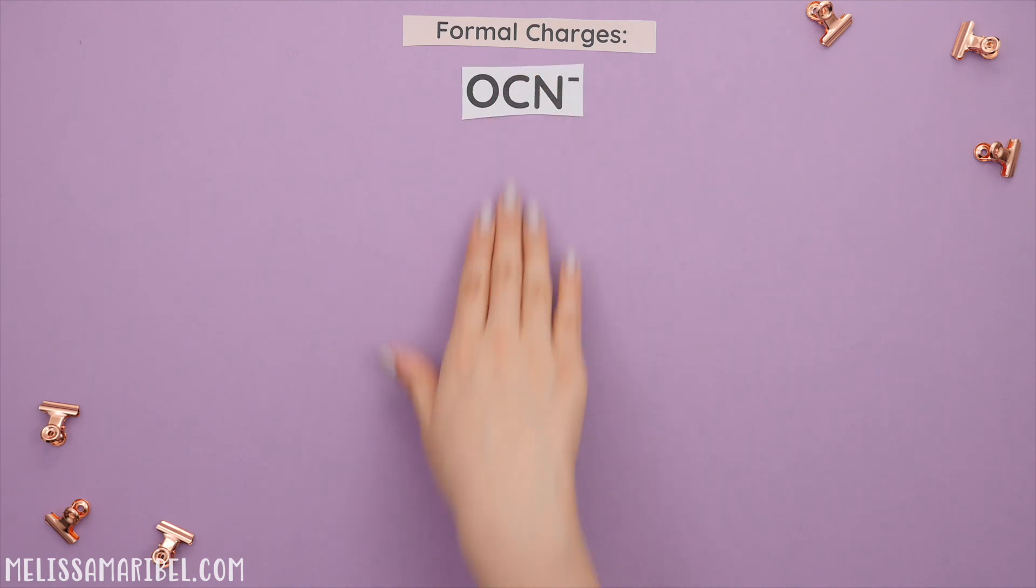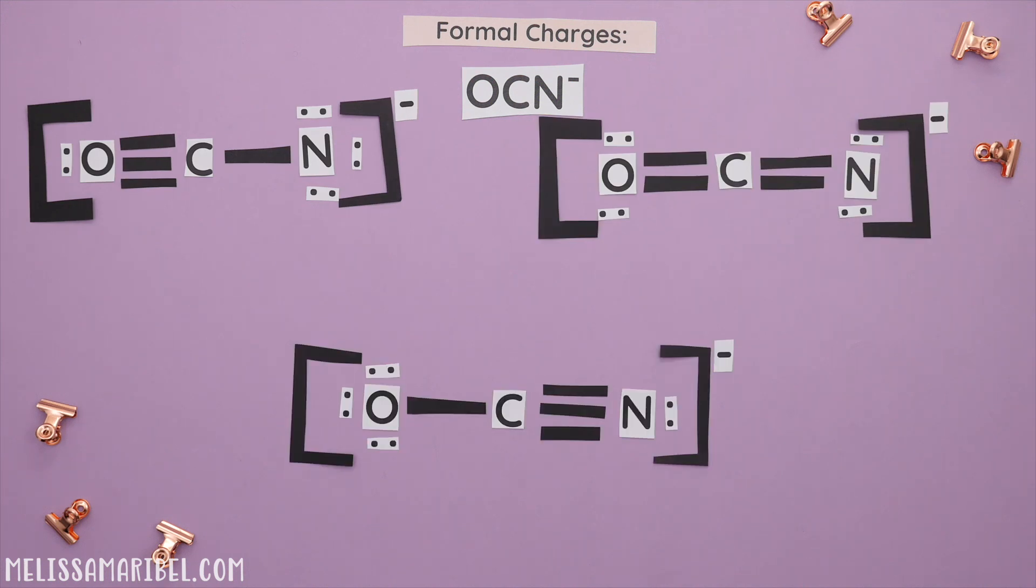Case two, we have a charged molecule. Here are all the possible structures we have. Let's use formal charges to help us see which one is the most stable. We'll find the formal charges for each atom in the structure. Oxygen has six valence electrons. There are two bonding electrons and four individual lone pairs so we will get zero for our formal charge. Carbon has four valence electrons. There are four bonding electrons and no individual lone pairs. Carbon's formal charge is also zero.